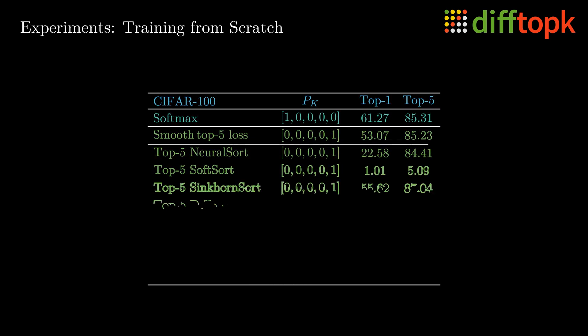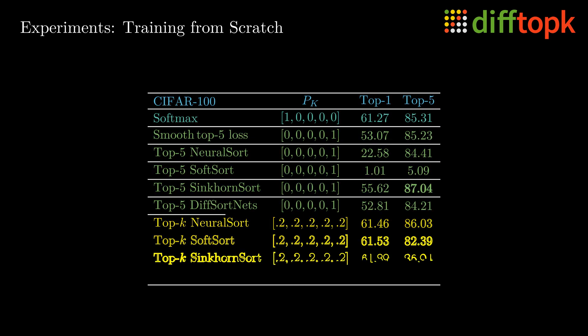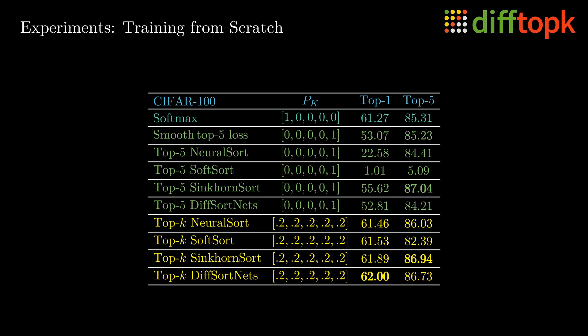Finally, we demonstrate that we can also use top-k classification learning to train from scratch and for this we train a ResNet 18 on CIFAR 100. Here, we find top 1 accuracy improvements for each of the differentiable sorting and ranking methods.